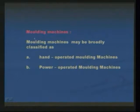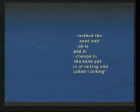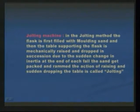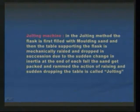For preparation of the mold, different molding machines are also available — hand operated molding machines and power operated molding machines. The first one is the jolting machine. In the jolting method, the flask is first filled with molding sand and then the table supporting the flask is mechanically raised and dropped in succession.